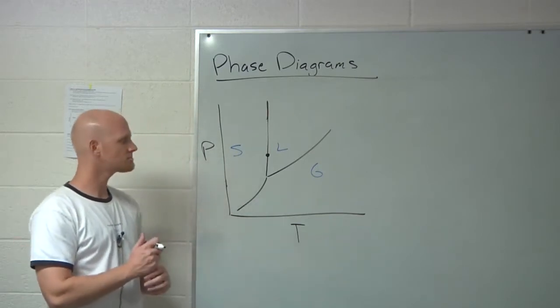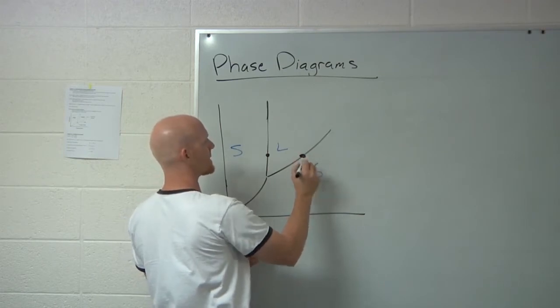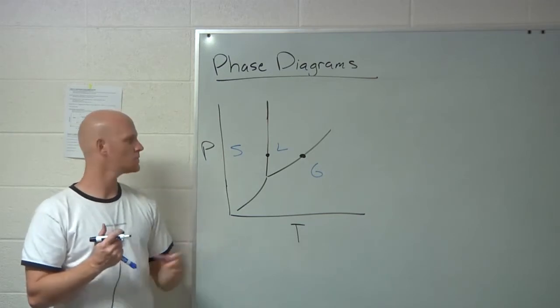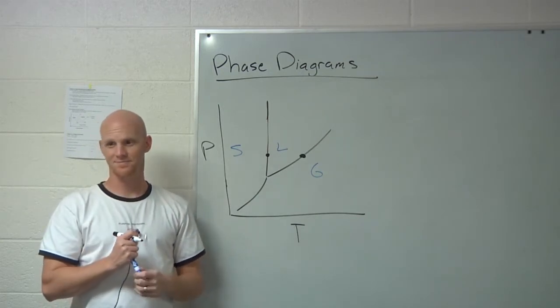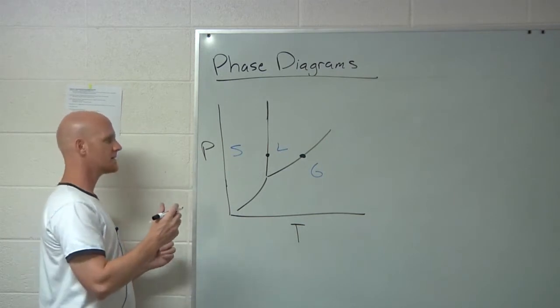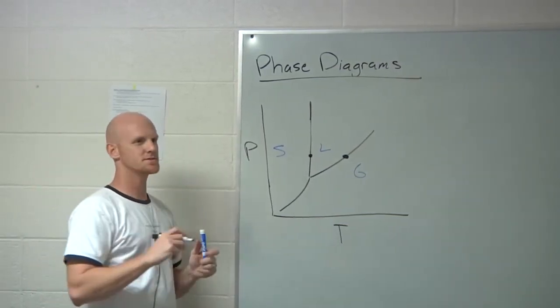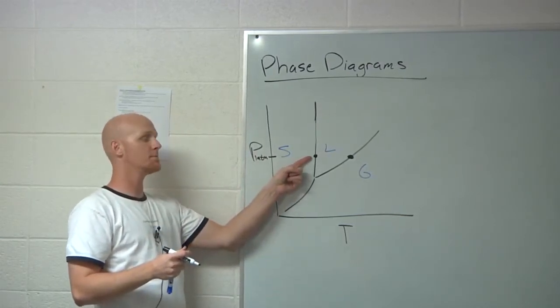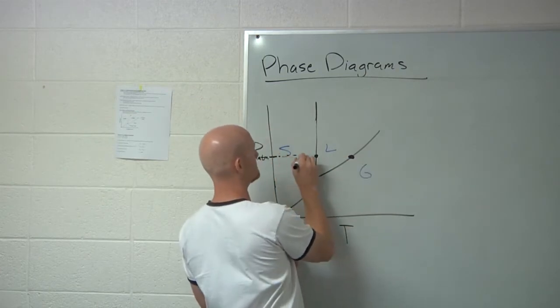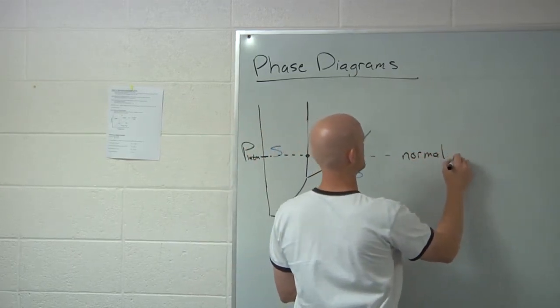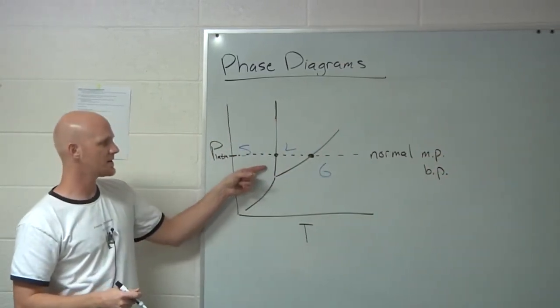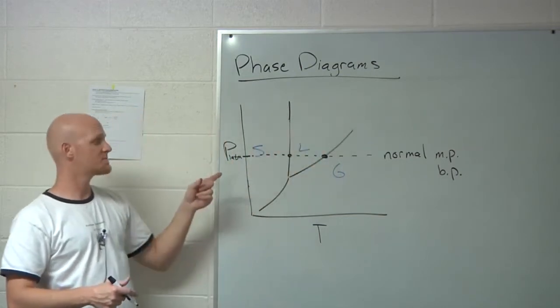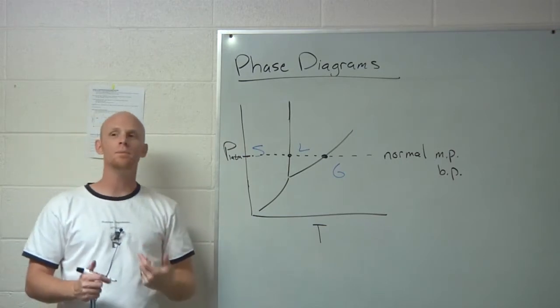Melting is solid to liquid, but liquid to solid is freezing - melting, freezing, fusion, crystallization, same difference. What if I went right here and I talked about a point where liquid and gas were at equilibrium together? That's your boiling point. Provided we're under normal conditions, what's the pressure under normal conditions? One atmosphere. These would be referred to as the normal melting point and the normal boiling point.